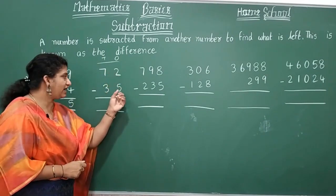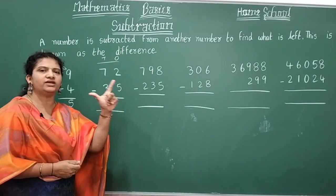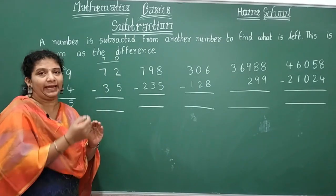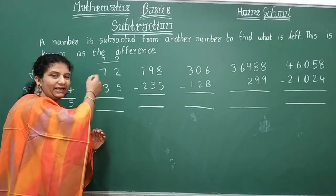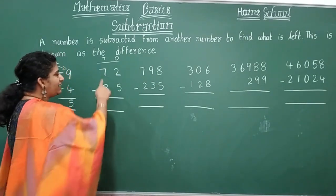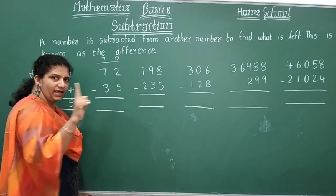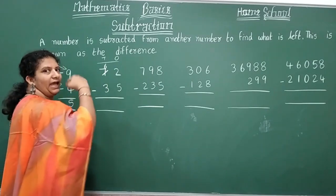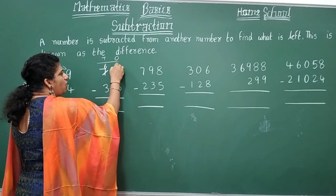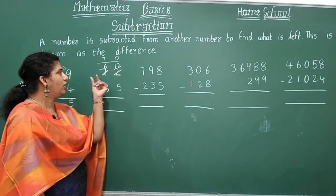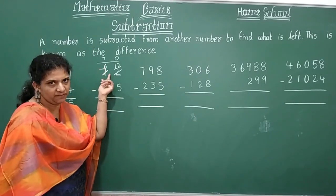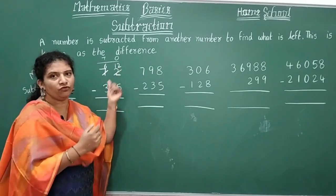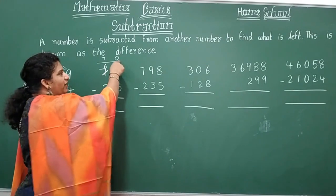For example, subtracting 35 from 72. In the ones place: can you subtract five from two? No. So you borrow a number from the tens place. The tens digit seven becomes six, and the borrowed one is carried to the ones place, making two become twelve.